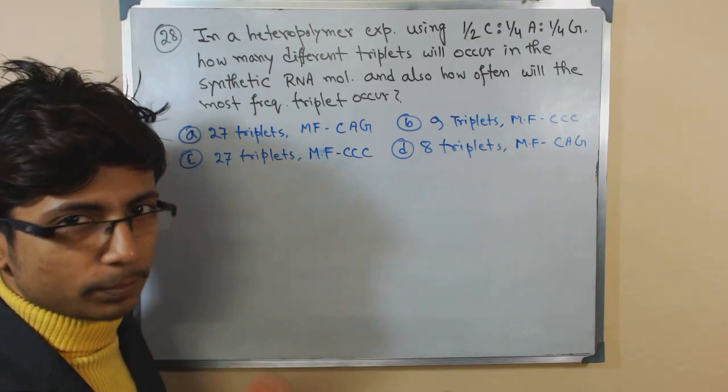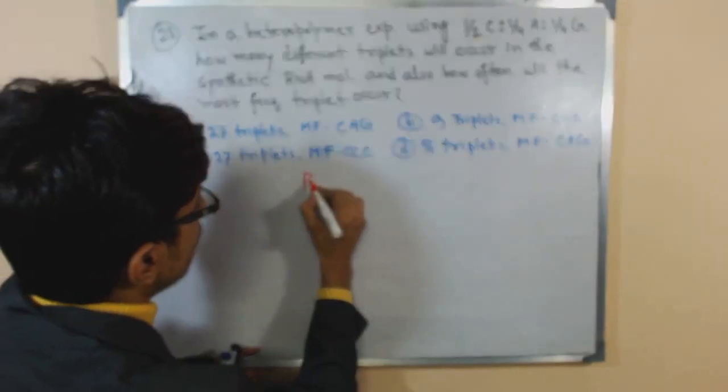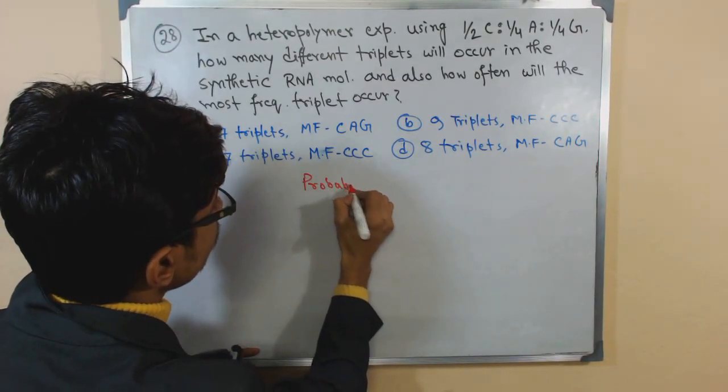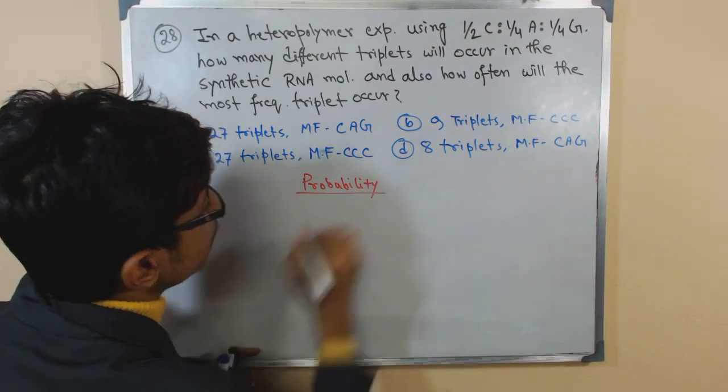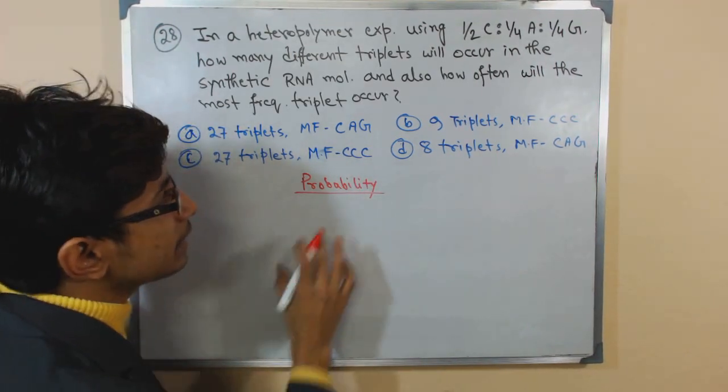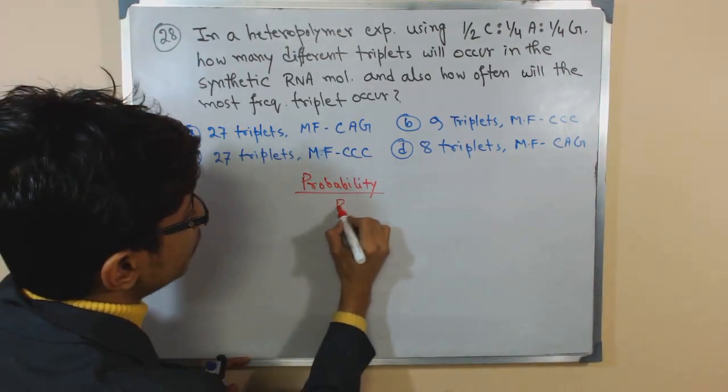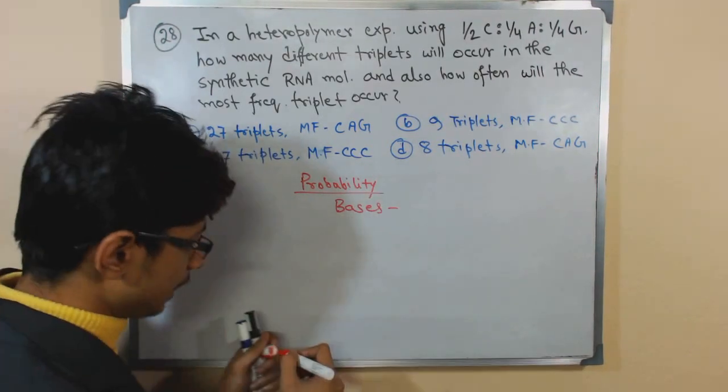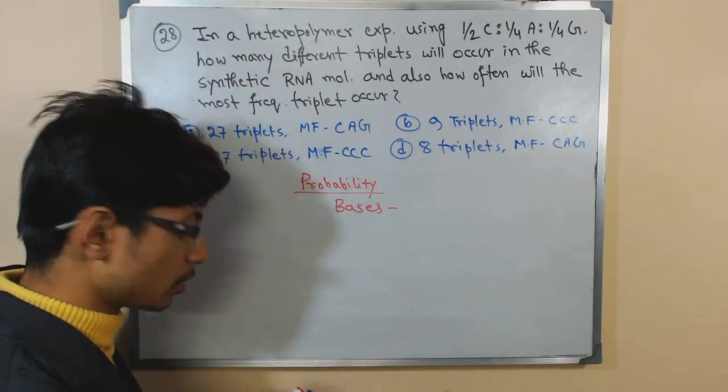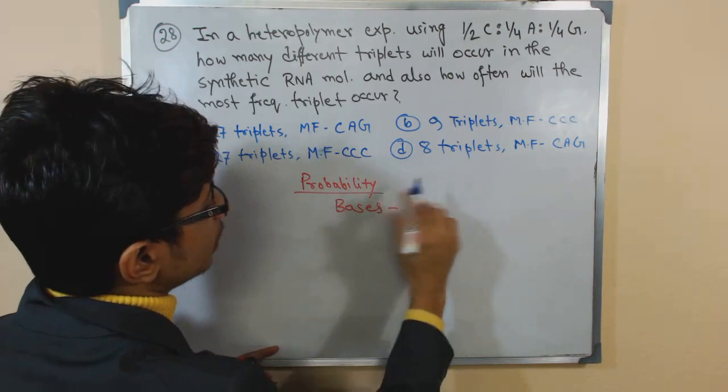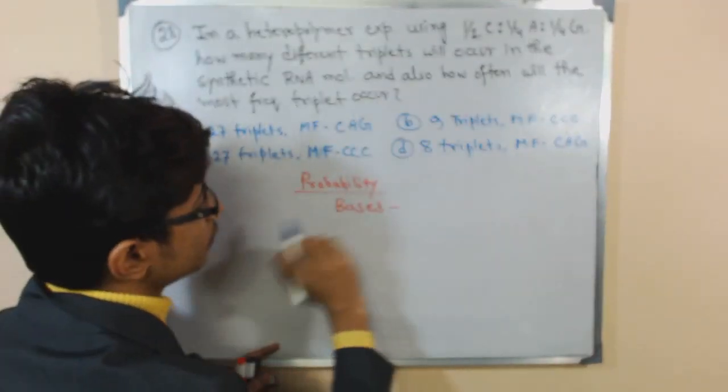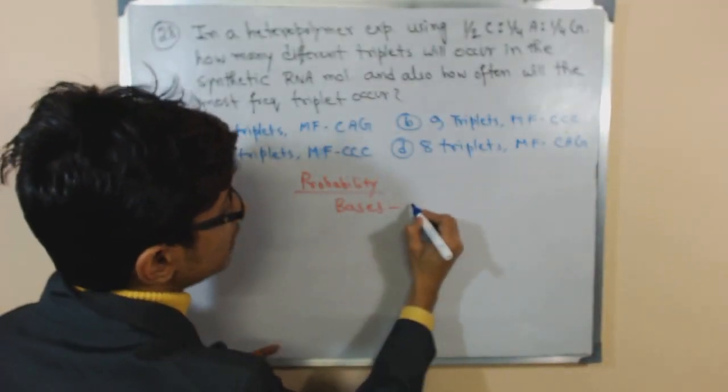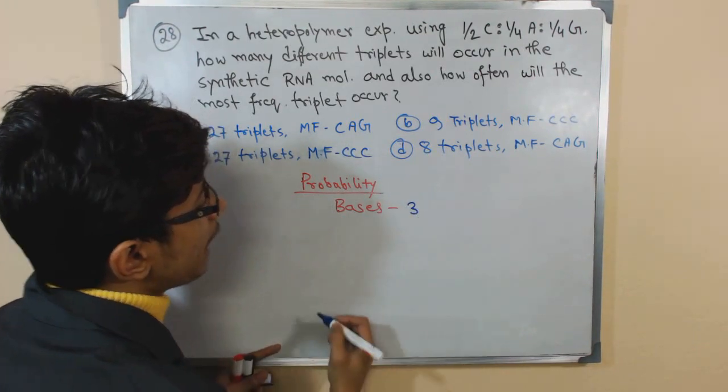For this type of question and problem, what we need to know is simple probability. In this case, we have three bases because we are talking about RNA. We exclude the other ones and use only these three bases to construct the whole sequence.